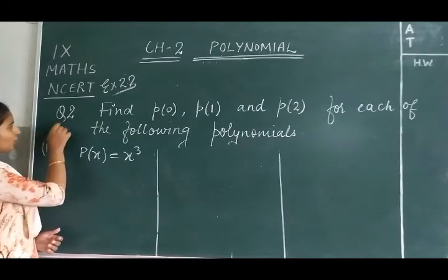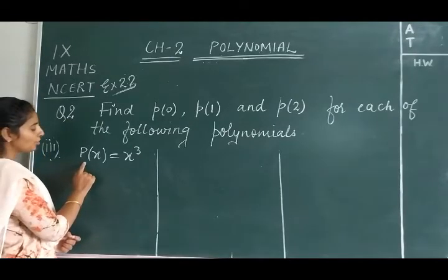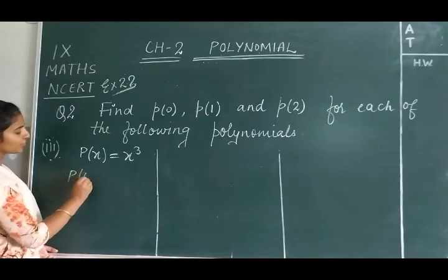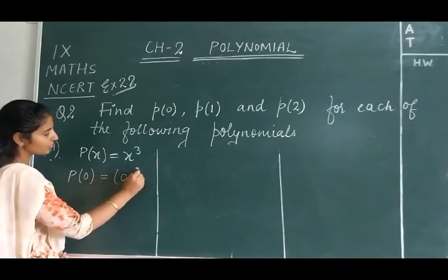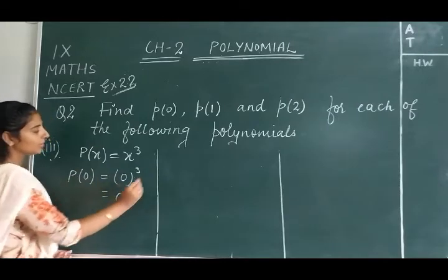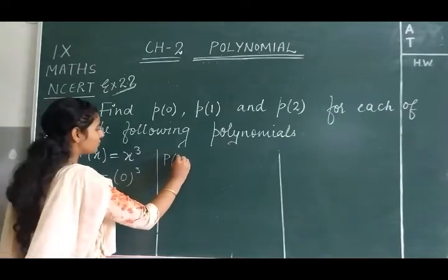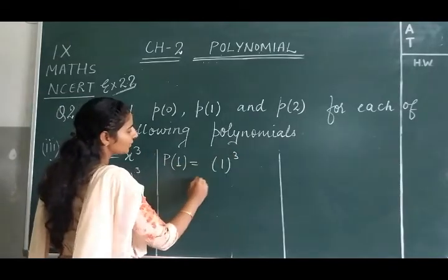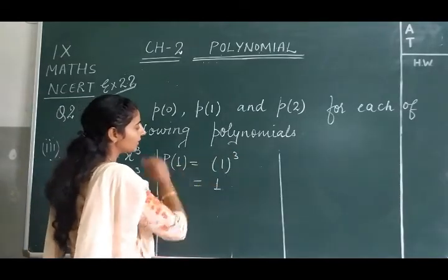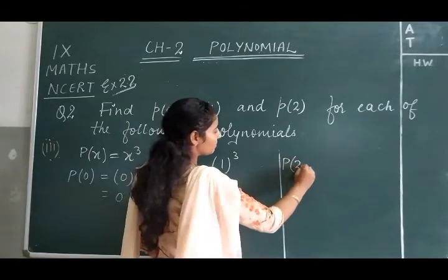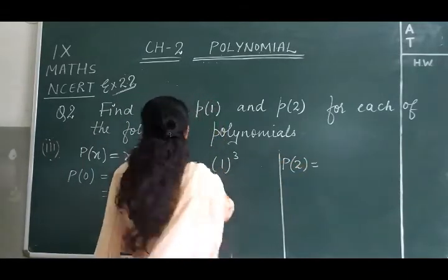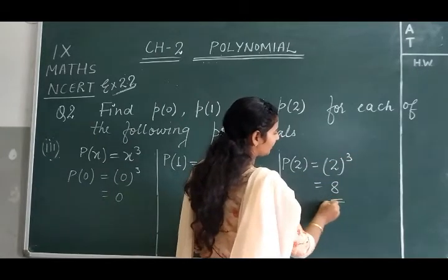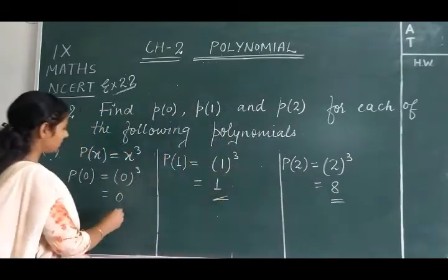Now the third part of question number 2: the polynomial is p(x) = x³. For P(0): put x = 0, which gives 0³ = 0. For P(1): put x = 1, which gives 1³ = 1 (1 cube is always 1). For P(2): put x = 2, which gives 2³ = 8 (2 cube is always 8).